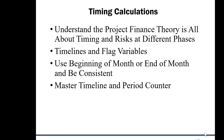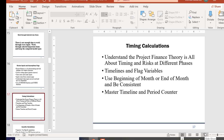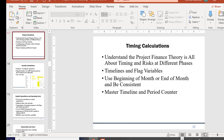When you construct the plant you have risks of cost overruns, delays, and construction risks, but after construction finishes that risk is gone. Then you start operating and have some hiccups at the start, but when you finish the ramp-up that risk is gone too. So getting a timeline with flags for the beginning and end of each period is a big deal.